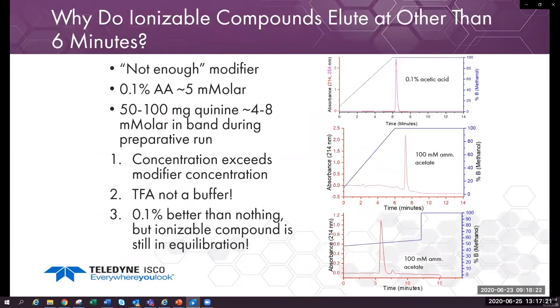Let's go back to our old friend quinine. The top run is 0.1% acetic acid and the scouting run, the scouting gradient in the middle is 100 millimolar ammonium acetate. The bottom run is the calculated gradient from the buffered run.